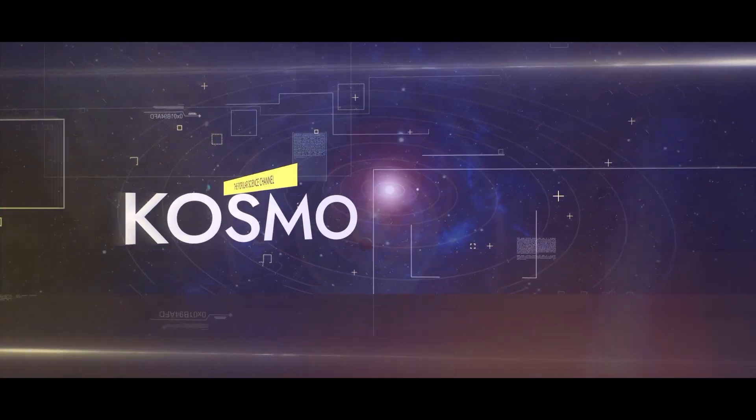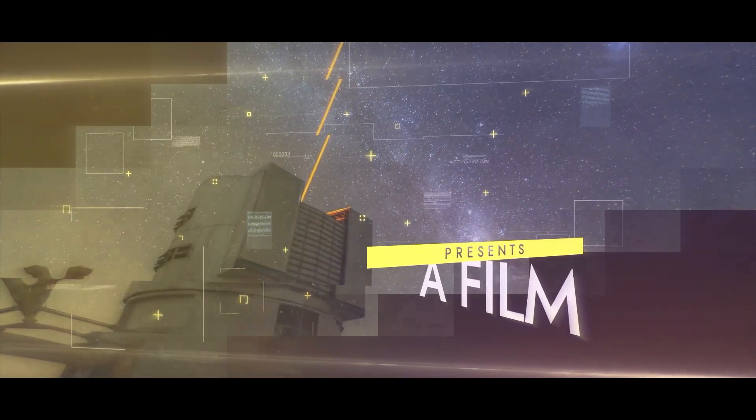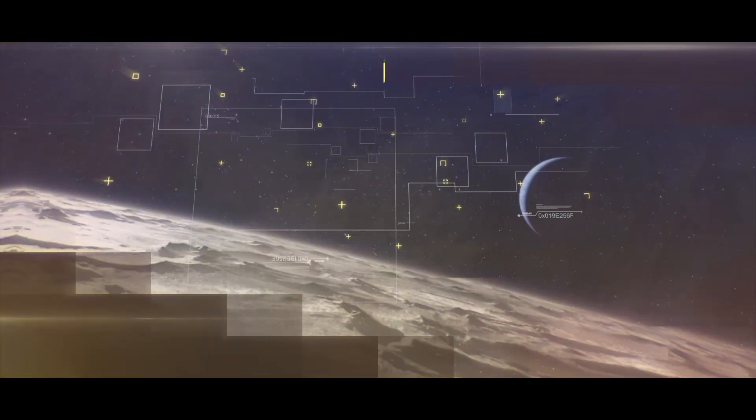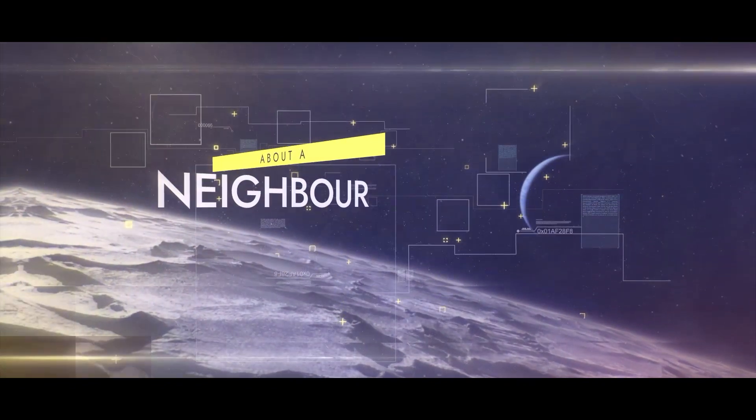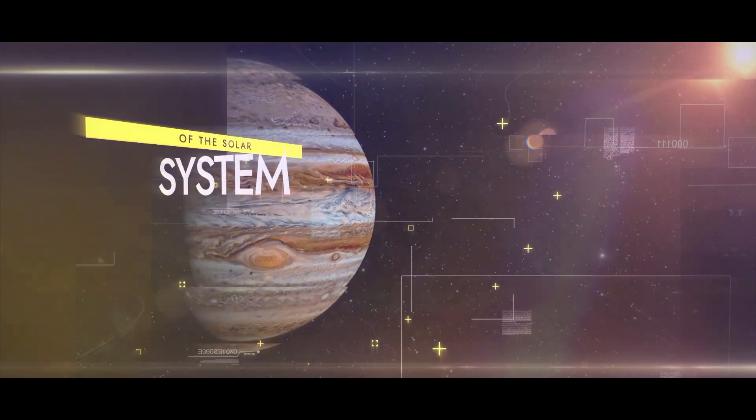The solar system is the area of space that has been investigated by mankind most. People have been observing the planets, satellites and other celestial bodies in the space around the sun for hundreds of years. Thanks to their efforts, the space objects lying closest to us have been studied comparatively well.